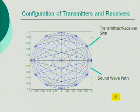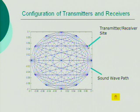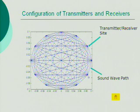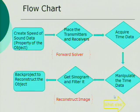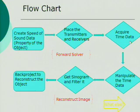This is a configuration made by MATLAB. Each point represents a transmitter-receiver site, and the line between those points represents the path that the sound wave propagates through. After we have the transmitter-receiver set, we can now acquire the time data.